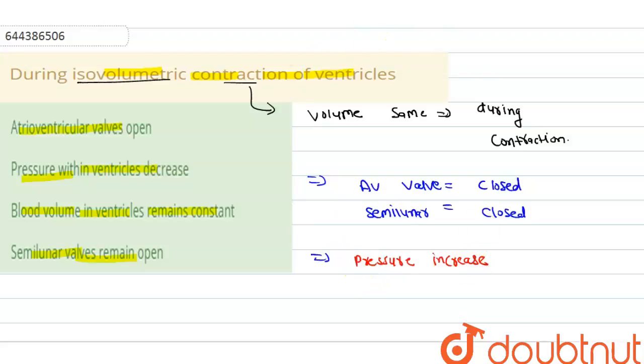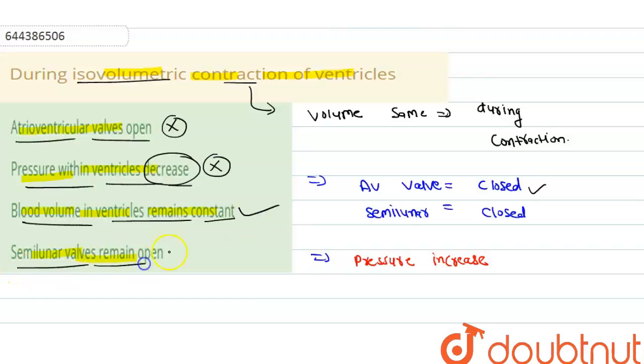Now talk about the options. So first option is saying that atrioventricular valve open, it is incorrect because they will be closed during the contraction. Pressure within the ventricles will be decreased, it is also incorrect because pressure will be increased. Blood volume in the ventricles remain constant, yes, it is the right option.